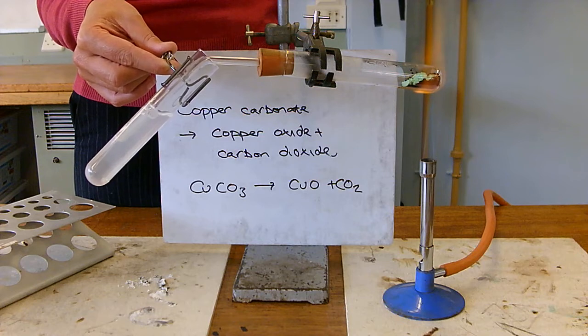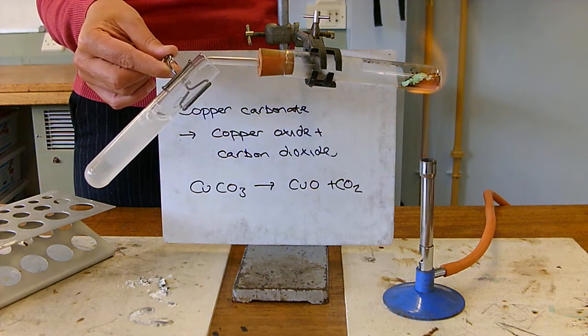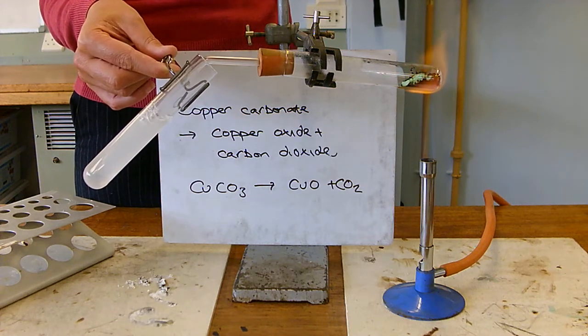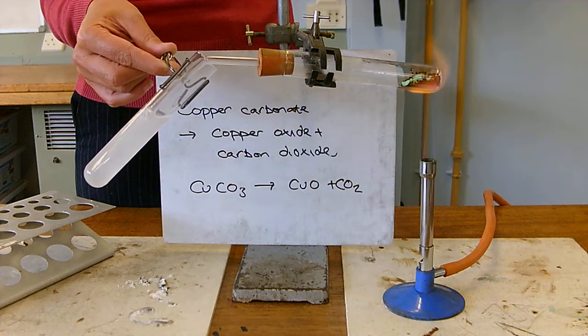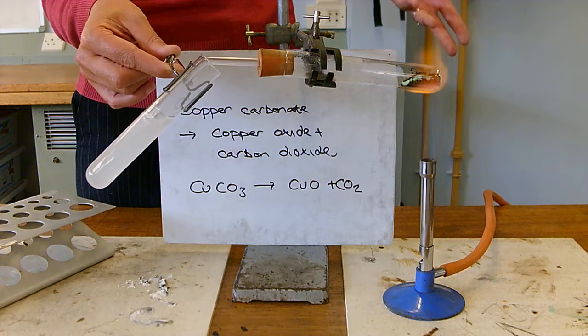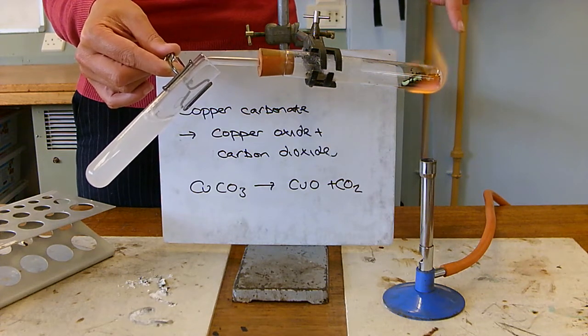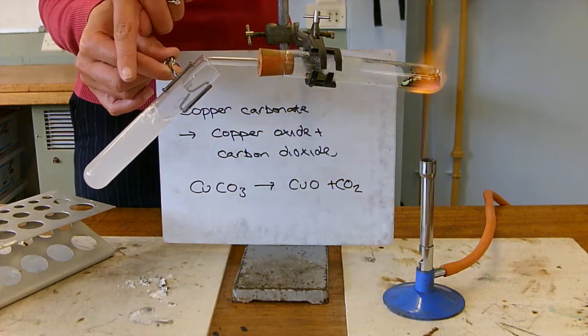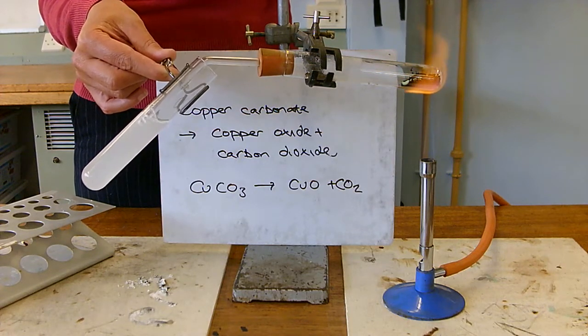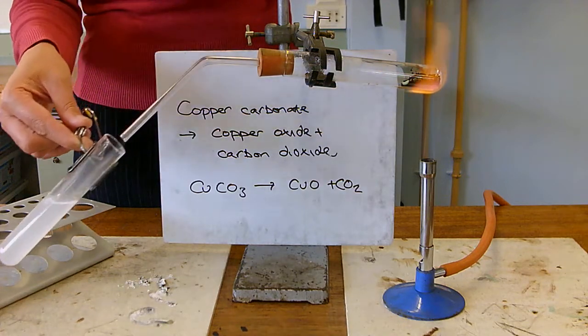The lime water slowly, as those bubbles of carbon dioxide go through it, is getting cloudier and cloudier. So, the heat has taken the copper carbonate and split it apart, broken it into two pieces. Copper oxide, the black stuff at this end. And carbon dioxide, the gas at this end, has made our lime water really cloudy.